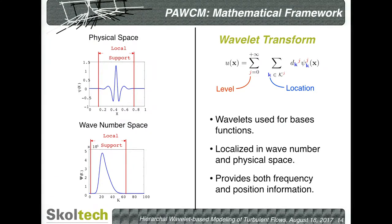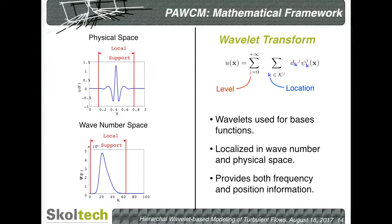That was a posteriori analysis. What we're after is getting the solution right away, on the fly, in compressed form. Why wavelets? Because compared to classical methods, they have very nice properties. Compared to Fourier expansions, Fourier has very good localization in wavenumber space but very non-local behavior in physical space. Finite difference, finite volume, and finite element methods are the opposite — very good localization in physical space but poor in wavenumber space. Wavelets have near-optimal behavior because they are localized in both wavenumber space and physical space.